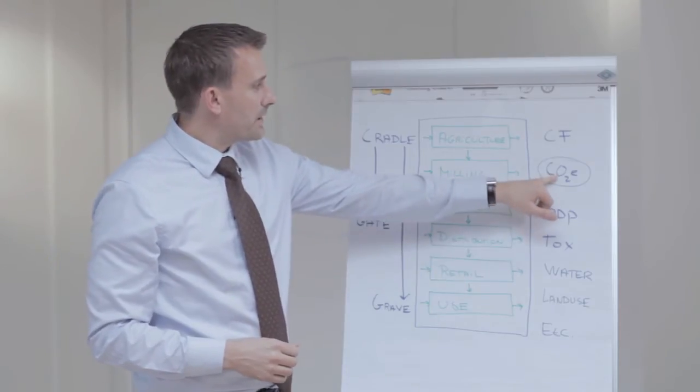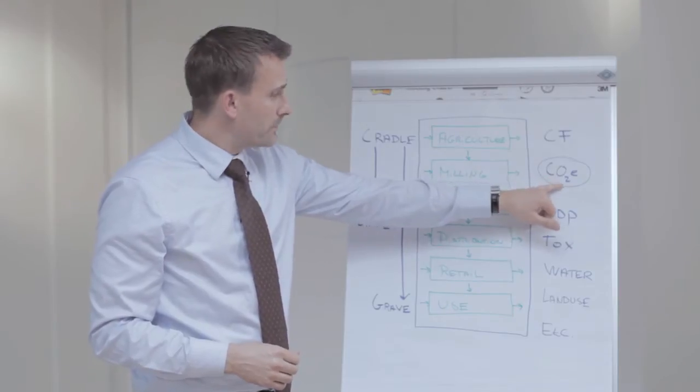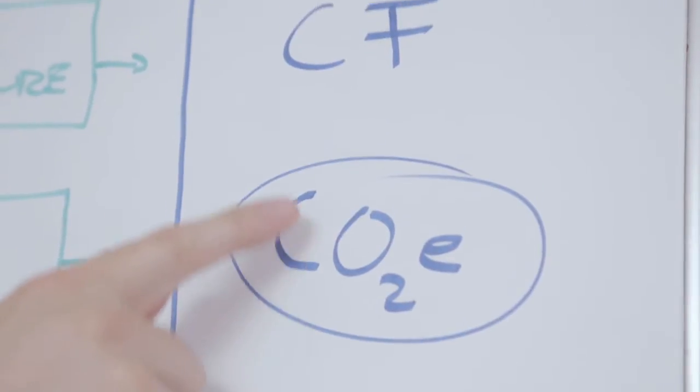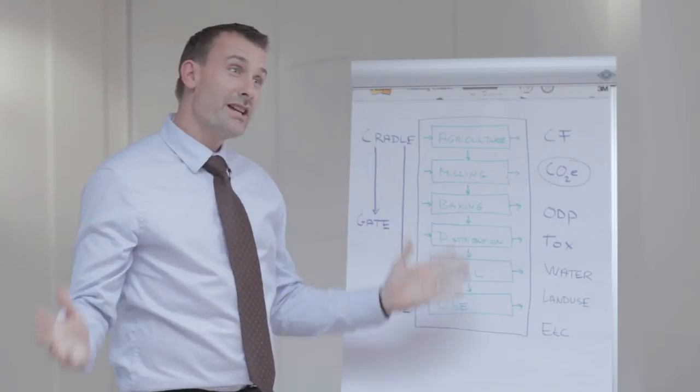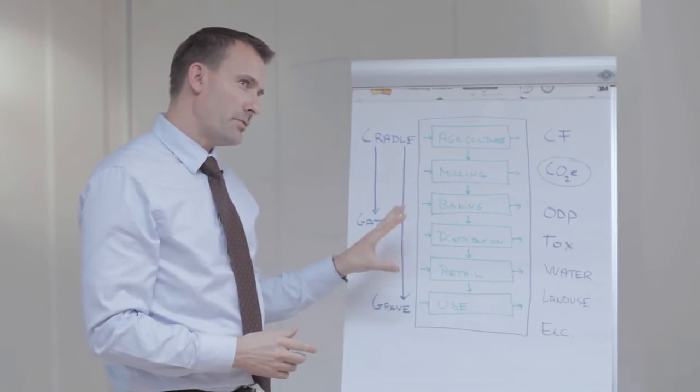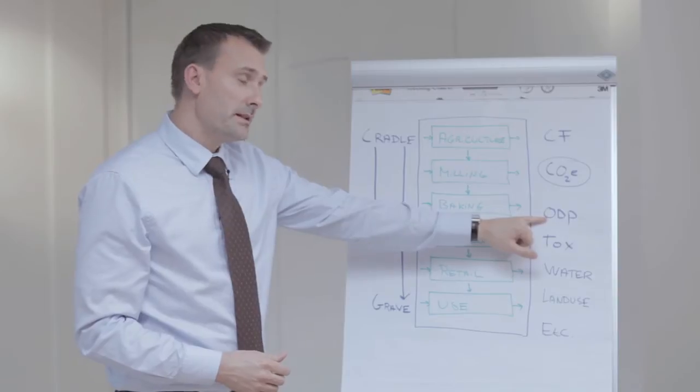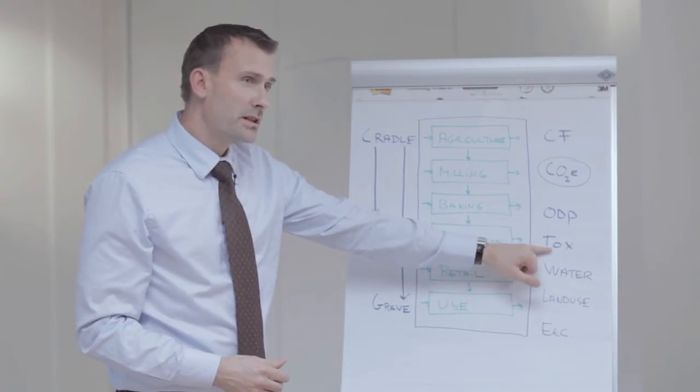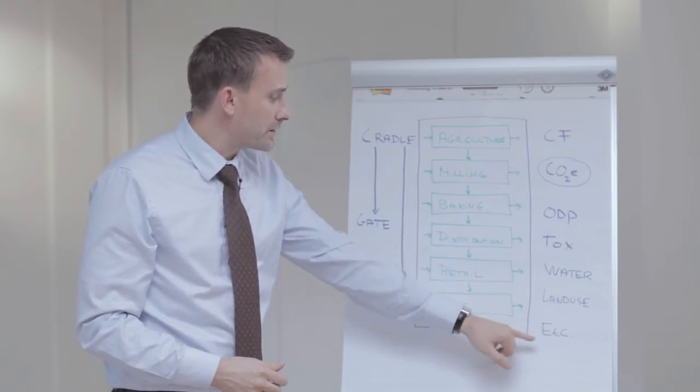We typically talk about the contribution to global warming. We measure that in CO2 equivalents and we can also call that the carbon footprint. But there is a range of other impact categories that we also measure. There are some examples here: ozone depletion potential, toxicity, water use, land use, etc.